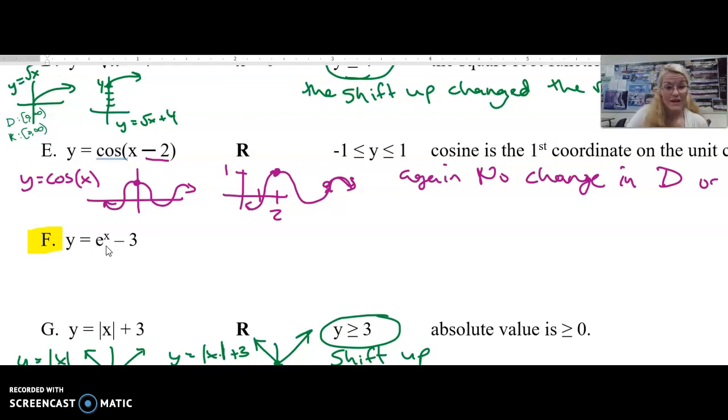Okay, so y equals e to the x, that is one of our basic functions. And when x is 0, e to the 0 is 1. When x is 1, e to the 1 is e. So 1, 2, that's like 2.7, that's about right here. And it grows. And yet there's this asymptote here. And you've got the left-sided end behavior going towards 0. So you've got the horizontal asymptote y equals 0. So my original basic function, the domain was or is all real numbers. And my range is from 0 up to infinity, right? Y must be strictly greater than 0.